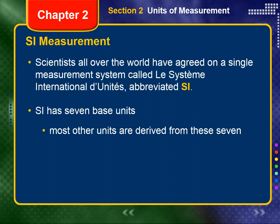Chapter 2, Section 2: SI Measurements. Scientists all over the world have agreed on a single measurement system called Le Sistema Internacional des Units, abbreviated as SI. This system was adopted in 1960 by the General Conference on Weights and Measures. SI has 7 base units, and most other units are derived from these 7. Some non-SI units are still commonly used by chemists and are also used in this book.